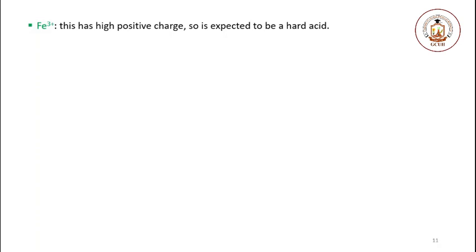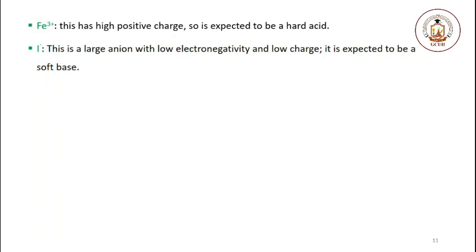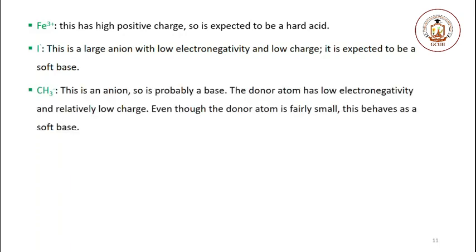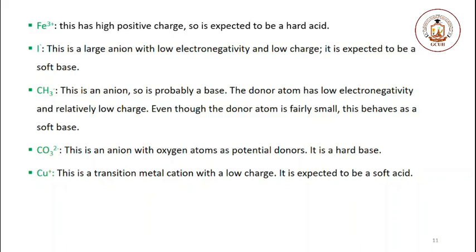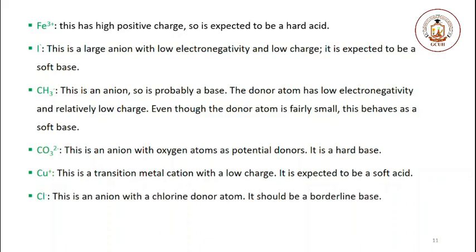Examples: ferric iron has a high positive charge, so it is expected to be a hard acid. Iodide is a large anion with low electronegativity and low charge — it is expected to be a soft base. The methyl ion is an anion; its donor atom has low electronegativity and relatively low charge, and even though the donor atom is fairly small, it behaves as a soft base. Carbonate is an anion with oxygen atoms as potential donors — it is a hard base. Copper(I) cation is a transition metal cation with low charge — it is expected to be a soft acid. Chloride is an anion with a chlorine donor atom — it should be a borderline base.